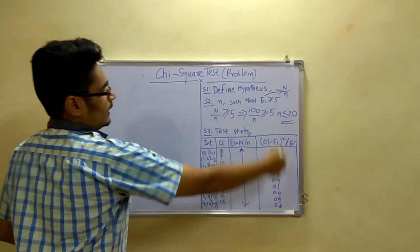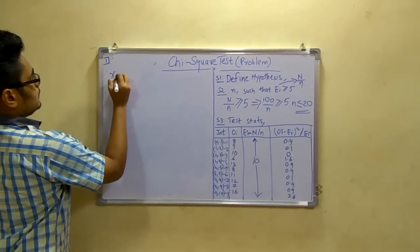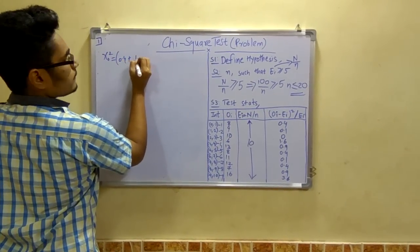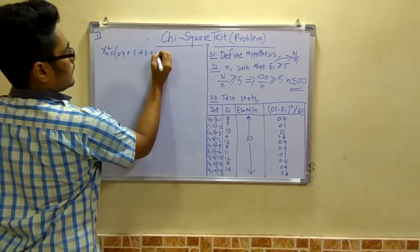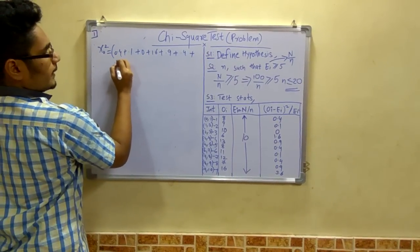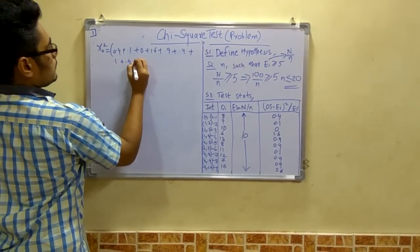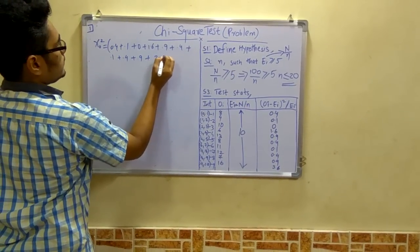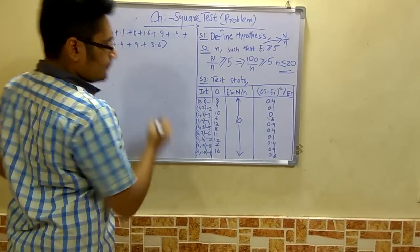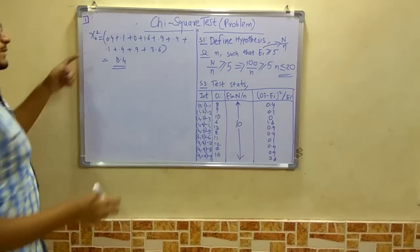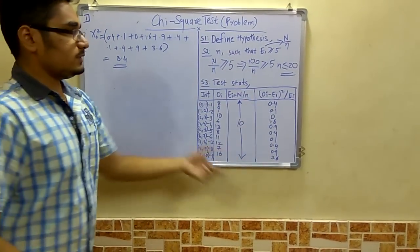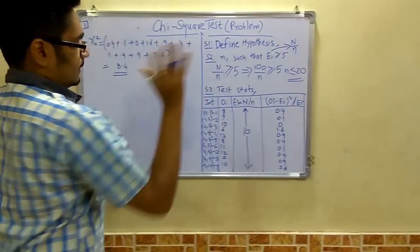Now you have to add up all these values. That is, the chi0 square is equal to 0.4 plus 0.1 plus 0 plus 1.6 plus 0.9 plus 0.4 plus 0.1 plus 0.4 plus 0.9 plus 3.6. Now this value comes out to be 8.4. So this is the chi0 square, that is the computed value from all these things after we done step 3.